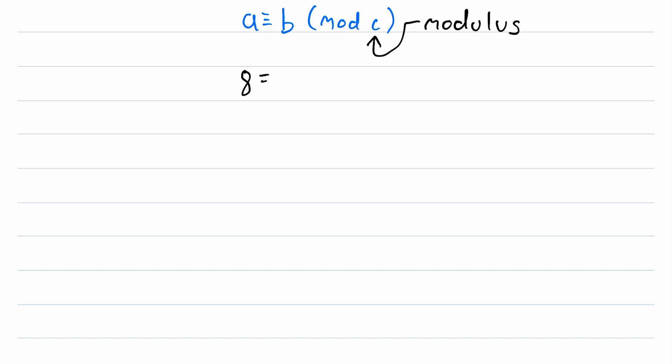So here's an example of a modular congruence. 8 is congruent to 14 mod 3. So why is this true? It's true because when you divide 8 by 3, you get the same remainder as when you divide 14 by 3. 8 divided by 3 gives a remainder of 2. 14 divided by 3 also gives a remainder of 2. We can see this is true because 8 is equal to 2 times 3 plus 2, so there you've got your remainder of 2, and 14 is equal to 4 times 3 plus 2.